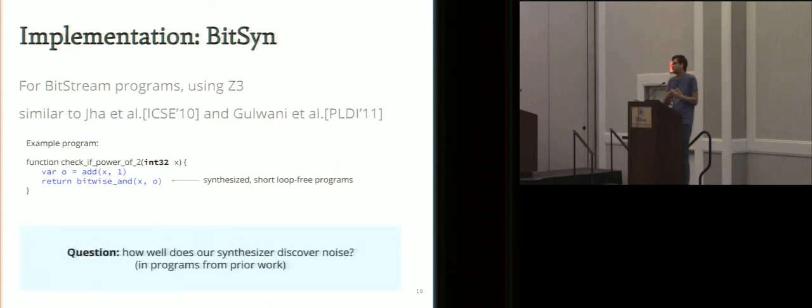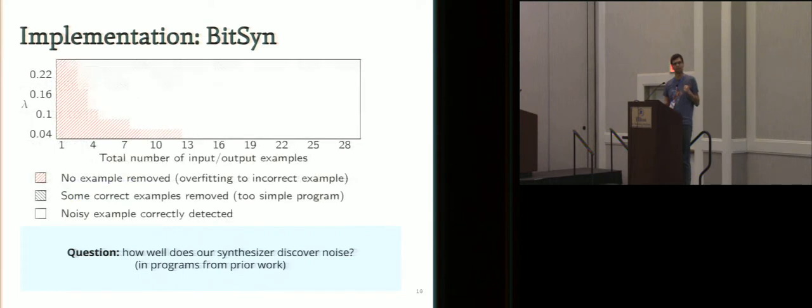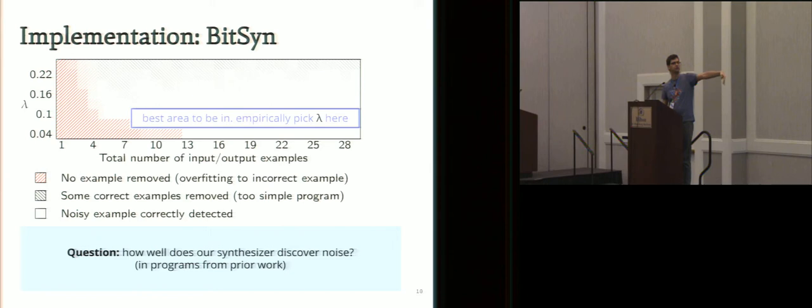Do we ask ourselves how well can you identify noise? If we provide input-output examples and make one incorrect example, how many more correct examples does it need so that it finds the incorrect one? This depends on the constant lambda. There is a good area for this lambda to be. If lambda is around 0.1, we consistently identify the incorrect example.